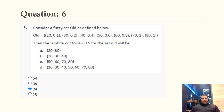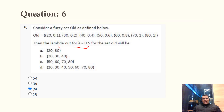Question 6: Consider the fuzzy set 'old' defined as old = {20/0.1, 30/0.2, ...}. Find the lambda cut for alpha = 0.5. In a lambda cut, we keep elements whose membership value is greater than or equal to 0.5. Values 0.1, 0.2, 0.4 are less than 0.5 and are neglected. Elements with membership values 0.6, 0.5, 0.8, and higher are selected.